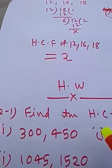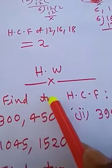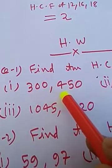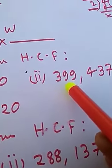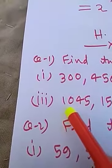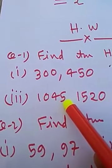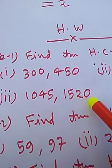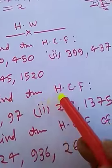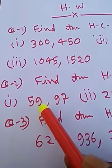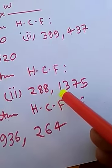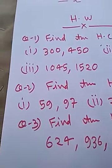Now here is the homework. Question 1: Find the HCF of (a) 308 and 450, (b) 399 and 437, (c) 1045 and 1520. Question 2: Find the HCF of (a) 59 and 97, (b) 288 and 1375.